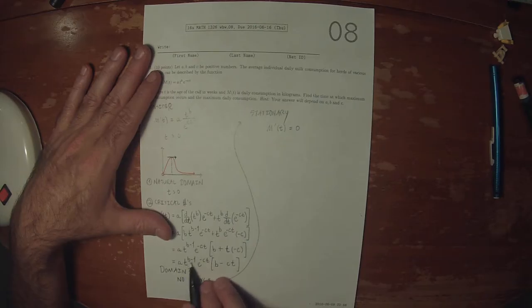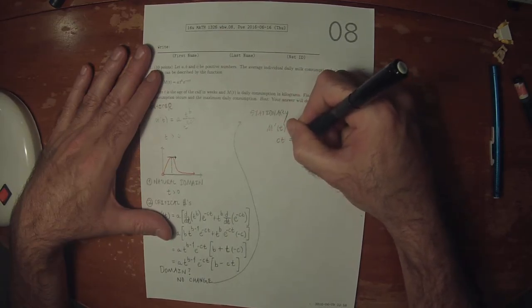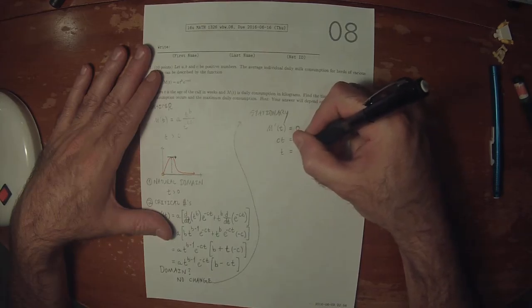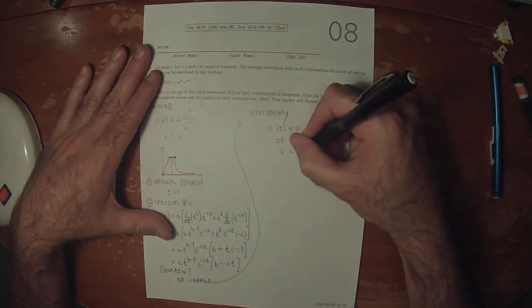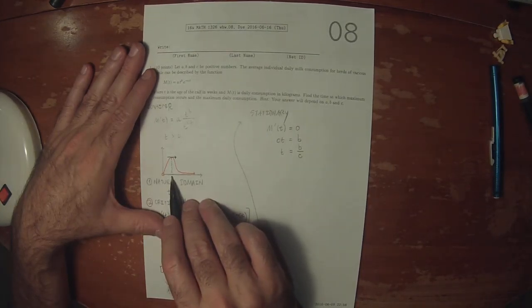T is positive so this is never zero. The exponential is never zero. And the only time this is ever zero is when CT is equal to B. So that T is B over C. So that's what that position is, B over C.